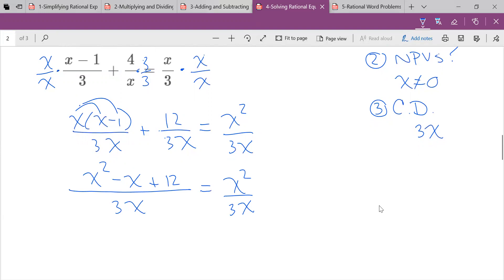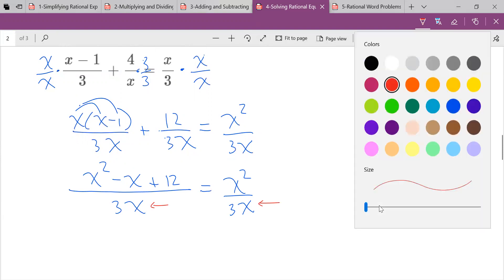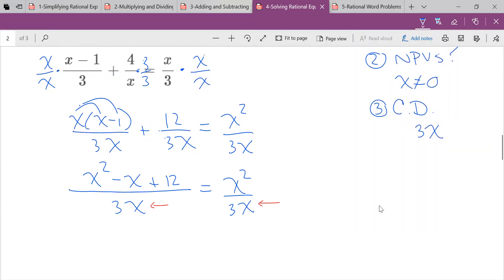Left-hand side is equal to the right-hand side. And I can see that the denominators are equal to each other. Well, if the denominators are equal to each other, I don't really need them. All I need to solve for then is the numerators. I'm going to say the numerator of the left-hand side has to be equal to the right-hand side.